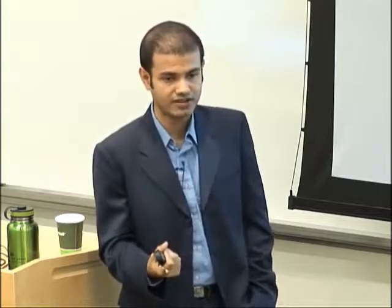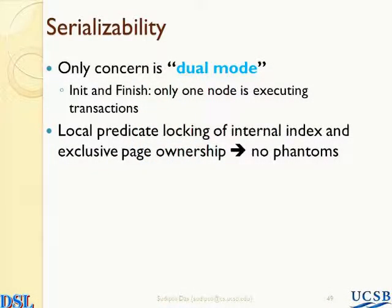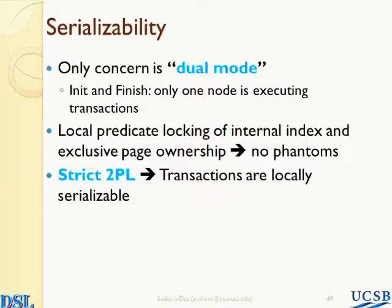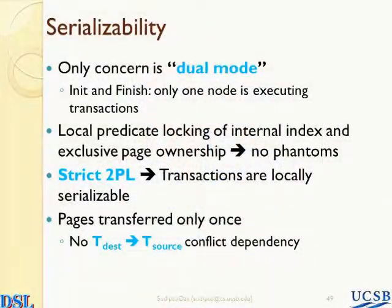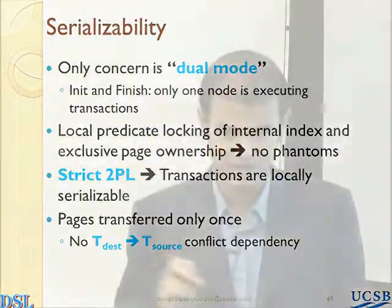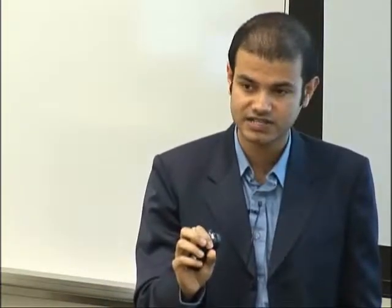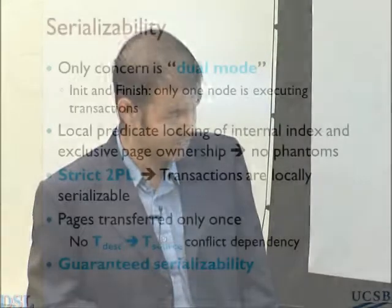How am I going to guarantee serializability during transaction execution? The dual mode is the only concern, because only in the dual mode are the two nodes executing transactions concurrently. In the paper, we show that you can use local predicate locking at the index level and exclusive page ownership at the leaf level to ensure there are no phantoms during migration. We use strict two-phase locking during normal transaction execution to guarantee that transactions are locally serializable. Because we use only one synchronization at the database page migration, you can show that any transaction at the destination is ordered after a conflicting transaction at the source — a strict ordering is enforced. This prevents loops in your serialization graph, providing guaranteed serializability.